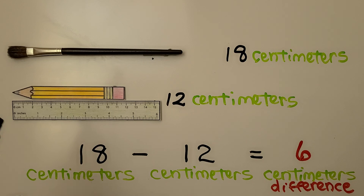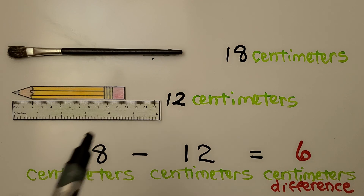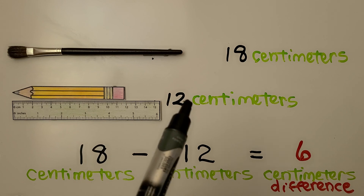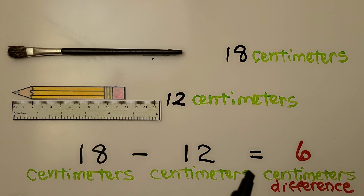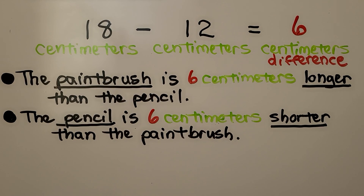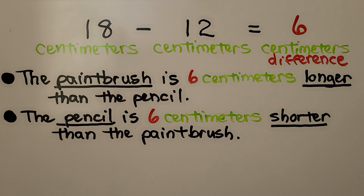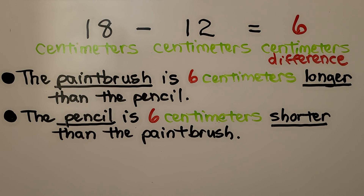We measure the pencil drawing by lining up zero with the tip. We look over and see it's at 12 — it's 12 centimeters. We do 18 centimeters minus 12 centimeters, which is 6 centimeters difference. We know the paintbrush is 6 centimeters longer than the pencil. We can also say the pencil is 6 centimeters shorter than the paintbrush.